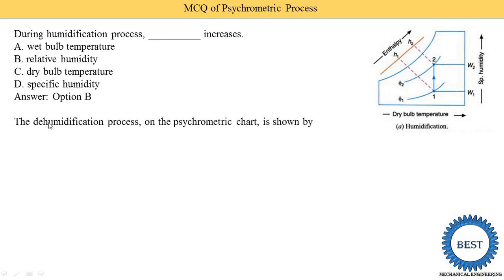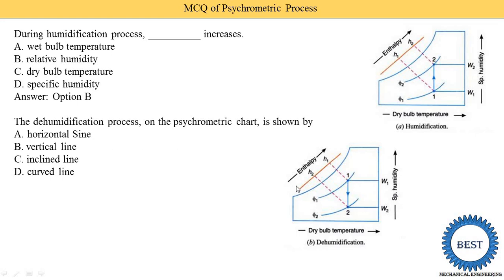The dehumidification process on the psychrometric chart is shown by: horizontal line, vertical line, inclined line, or curve line? During dehumidification at constant dry bulb temperature, moisture is removed from the air, so specific humidity is reduced from W1 to W2 — that's why the line is vertical. Similarly, for humidification the vertical line moves upward; for dehumidification it moves downward. For sensible heating and cooling the line is horizontal. For humidification and dehumidification the line is vertical. So option B is the correct answer.